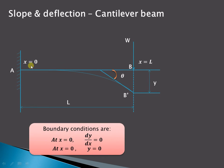Now the boundary conditions: at the fixed end there is no slope, so slope is 0, and therefore at x equal to 0 the slope dy/dx is 0. Similarly, at x equal to 0 there is no deflection, and therefore y is also equal to 0.